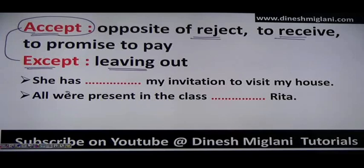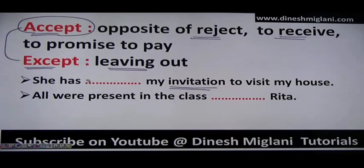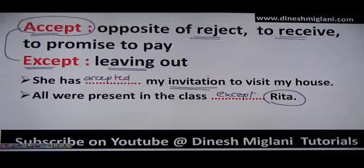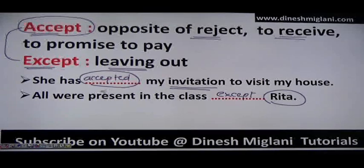Let's fill in the blanks. First sentence: 'She has __ my invitation to visit my house' — here we use 'accepted.' Second sentence: 'All were present in the class __ Rita' — meaning all students were there and Rita was not, so we use 'except.' In the first blank we fill 'accepted' and in the second we fill 'except.'